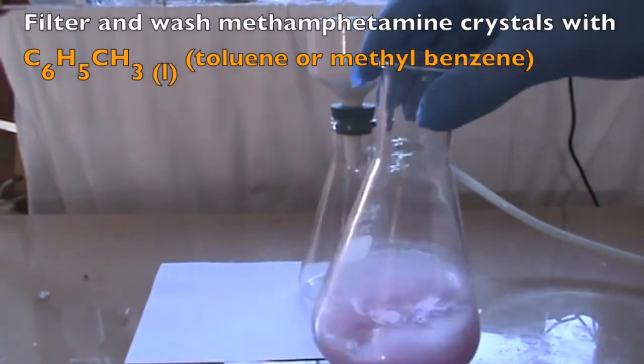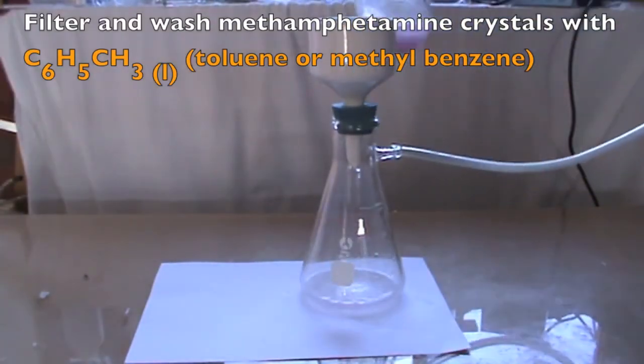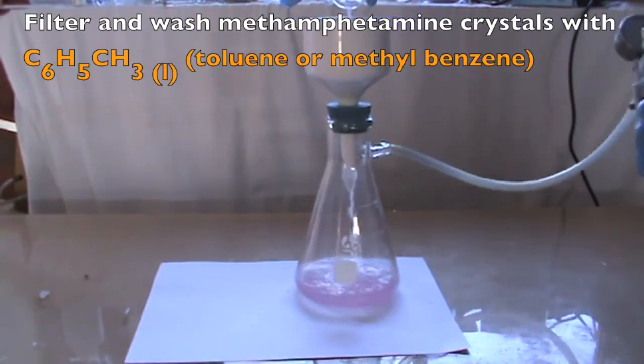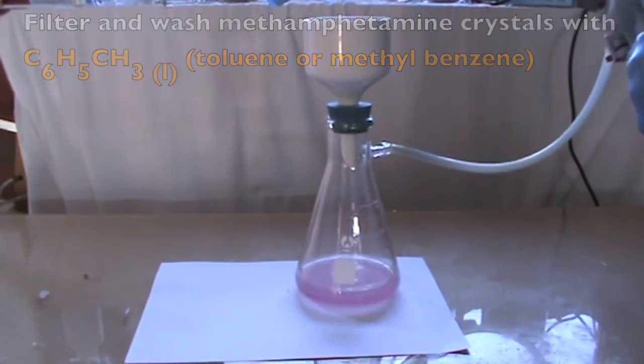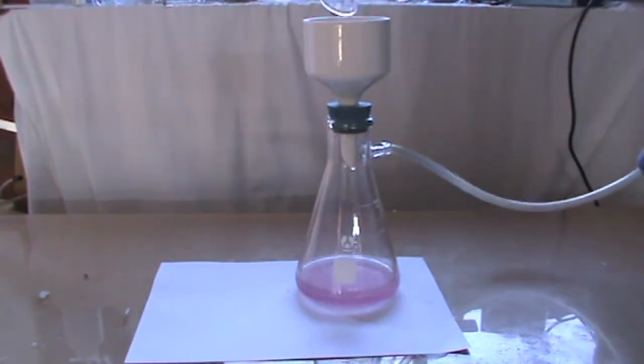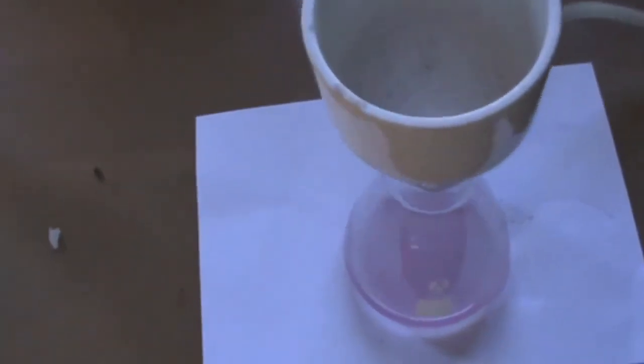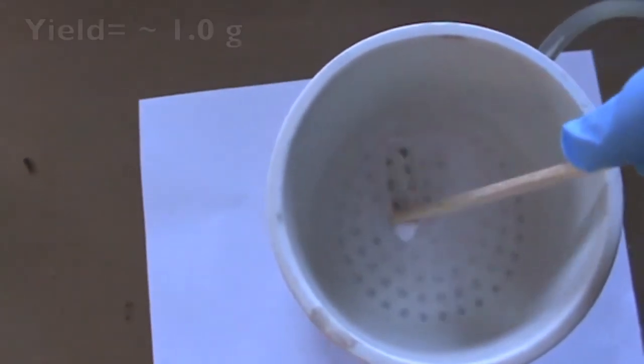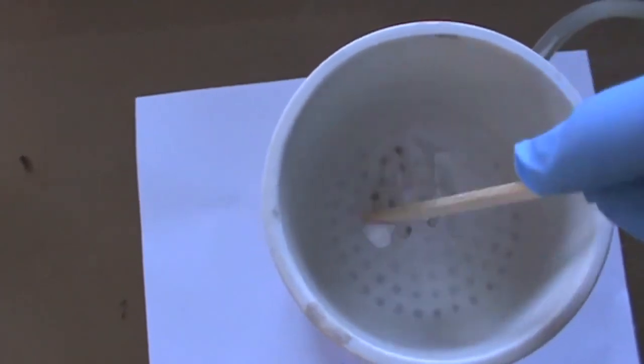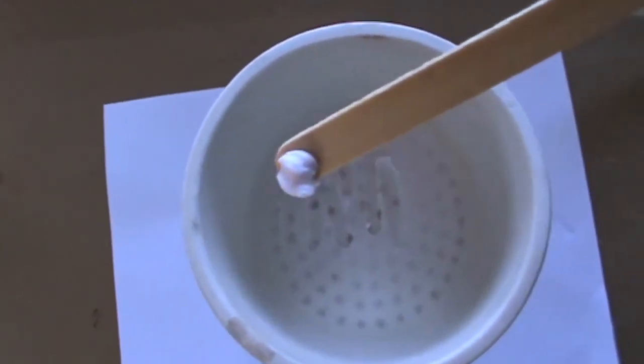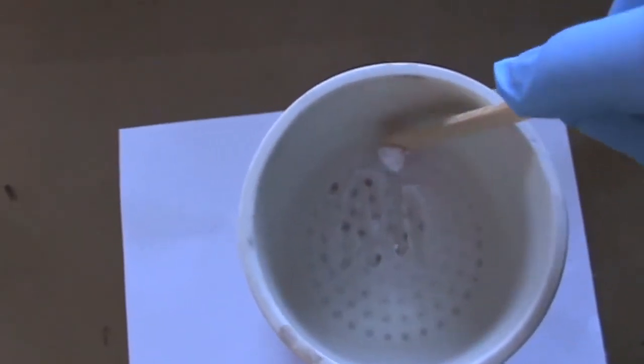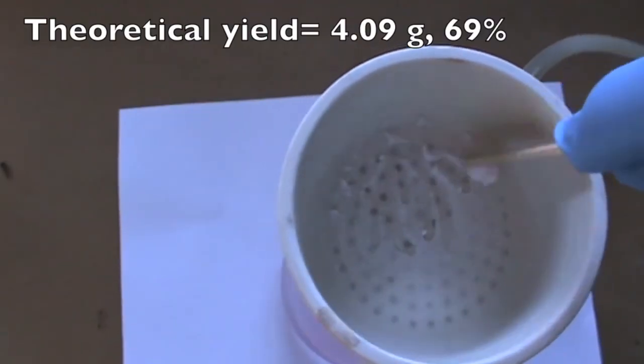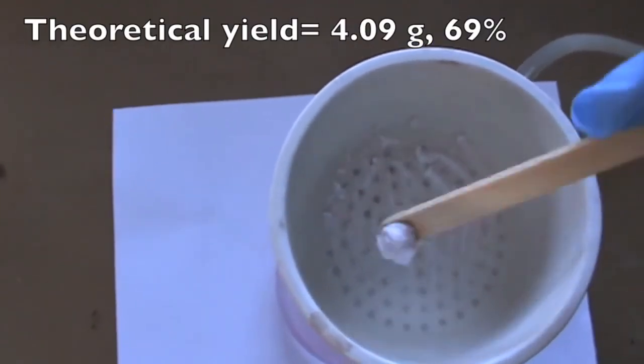Filter the precipitated methamphetamine hydrochloride crystals and wash it with some toluene. Also rinse out the flask with toluene and filter. As we can see pure white crystals of methamphetamine hydrochloride can be seen. The yield is around 1 gram. Note, the yield is a bit deficient as this could be due to me playing around with the camera during the synthesis. The theoretical yield of methamphetamine is 4.09 grams, 69%.